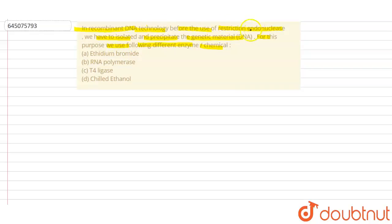Basically, they are saying that in recombinant DNA technology, before the use of restriction endonucleases, which are a type of restriction enzyme also known as molecular scissors, these molecular scissors are commonly used to cut the DNA at a particular site, and that particular site is basically known as restriction sites. Before the use of this restriction endonuclease, there are different enzymes and chemicals which are used for the isolation and precipitation.